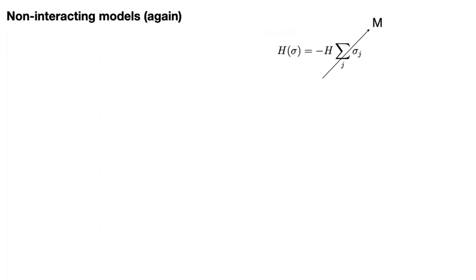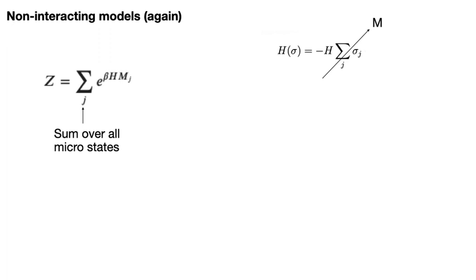Let's now suppose that we want to calculate the canonical partition function for this system. As you have learned in previous exercises, the partition function is given by this expression here. The sum runs over all the microstates, and for each state we must compute e to the power of beta multiplied by the energy. Beta, remember, is 1 over the temperature. Furthermore, as I have just explained, the energy of each state is minus H times the magnetisation of the state — so this is the field, the minus H, and this is the magnetisation of state j.